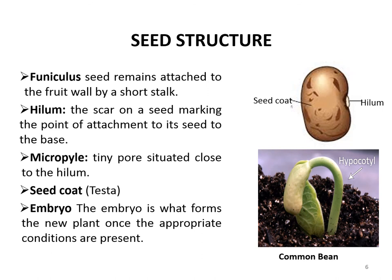The seed coat is the outer covering of the seed. It develops from the integument of the embryo. The seed coat is made up of two layers: an outer testa, which is hard, thick, and leathery, and an inner integument, which is thin, membranous, and papery.